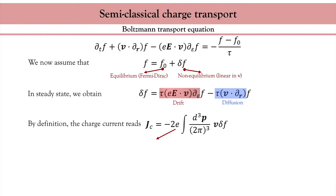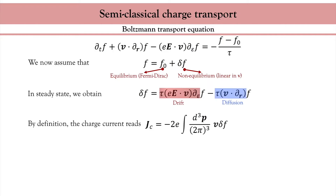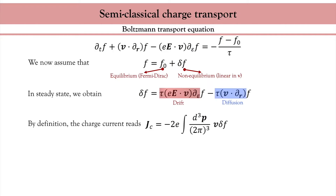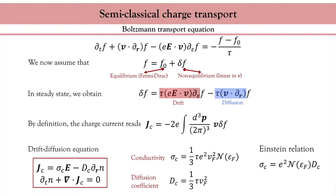Deriving the drift term and the diffusion term separately, and performing the integrations, the current density is parsed into a drift and a diffusion term. This is called the drift-diffusion model. We can also obtain the charge continuity equation by directly integrating Boltzmann's equation over momentum space. These coupled equations constitute the basic model for charge and spin transport in metals. They are parameterized by the conductivity and the diffusion coefficient, which are related to each other by the Einstein relation.